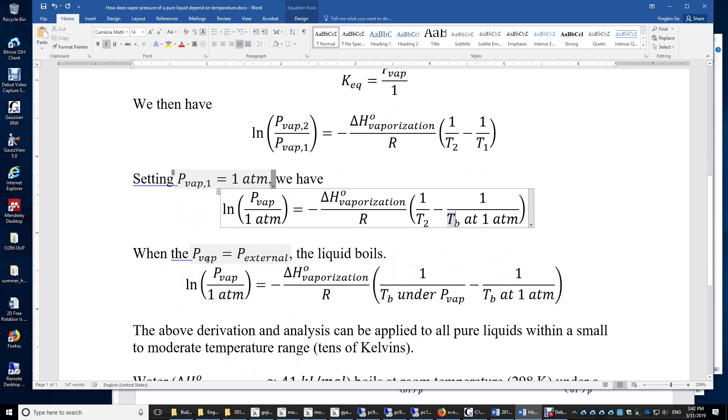When Pvap equals Pexternal, which is the external pressure the liquid feels, the liquid starts to boil. So we can compute the boiling point under reduced pressure, or we can compute the pressure at which water boils.